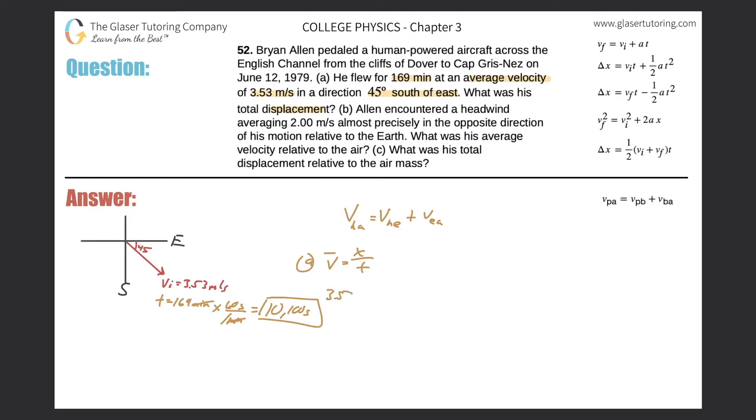His average velocity is 3.53. The displacement is what we're looking for, and the time was 10,100 seconds. So simply his total displacement will be 3.53 times 10,100. And that works out to be, let's see, what we'll do here is we'll do it in scientific notation. So we got 3.57 times 10 to the 4, and that is in meters. Great. So that's his total displacement. Easy peasy. Let's move on to letter B.